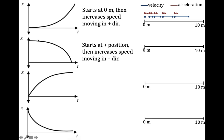The next example starts at a positive position and the object is going to increase its speed, but moving in a negative direction. The slope of the position-time graph is getting steeper, but the slope is negative — so increasing speed while moving in the negative direction.